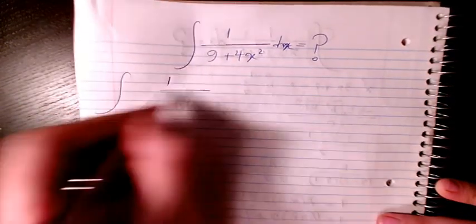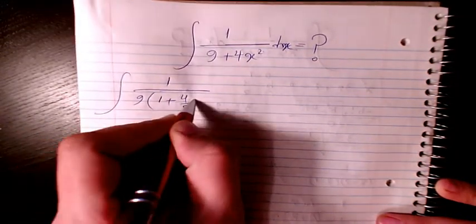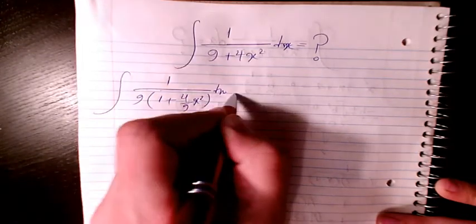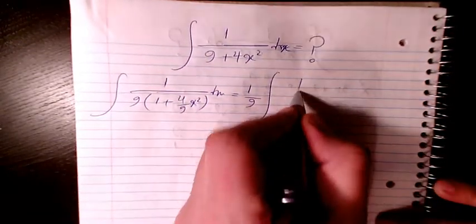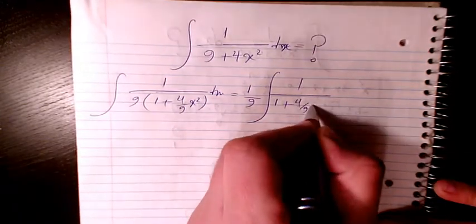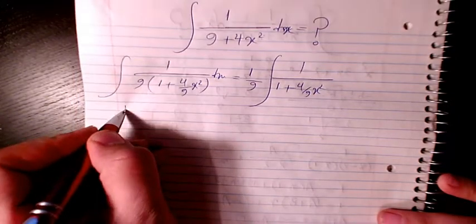I factor 9 here, it will be 1 plus 4 divided by 9 x squared dx. So I will have 1 over 9, 1 over 1 plus 4 over 9 x squared, or I can say 1 over 9, 1 over 1 plus 2x divided by 3 squared.